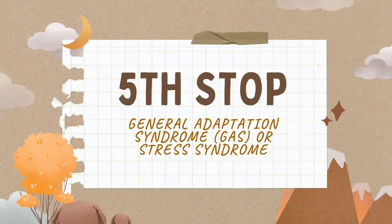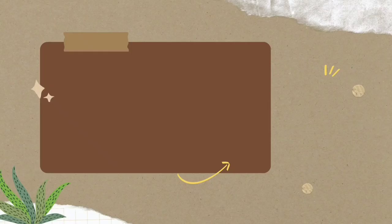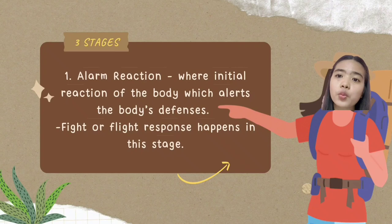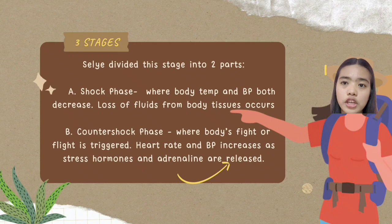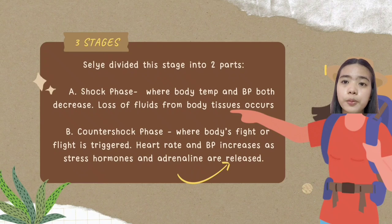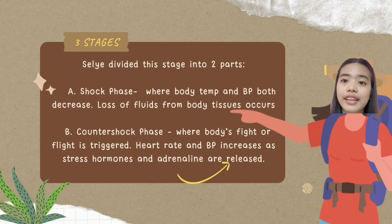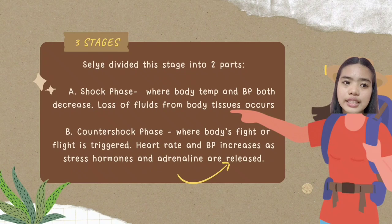Fifth stop: General Adaptation Syndrome, GAS, or stress syndrome. There are three stages of GAS: the alarm stage, the stage of resistance, and the stage of exhaustion. First is the alarm stage, or alarm reaction — the initial response of the body which alerts the body's defenses. This is where the fight-or-flight response happens. It is divided into two parts: the shock phase, where body temperature and blood pressure both decrease and loss of fluids from body tissues occurs; and the counter-shock phase, where the body's fight-or-flight is triggered and heart rate and blood pressure increase as stress hormones and adrenaline are released.